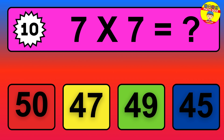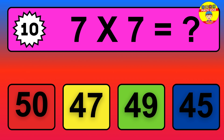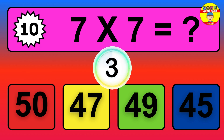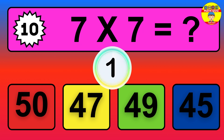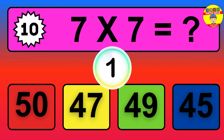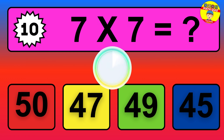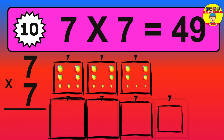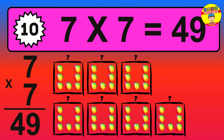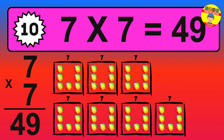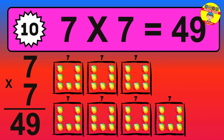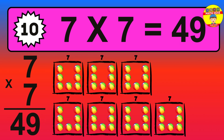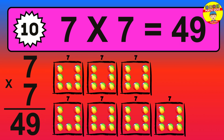Question ten: seven times seven equals what? The answer is seven times seven is forty-nine. To calculate, we have seven groups with seven balls each one. So how many balls do we have? Forty-nine balls.